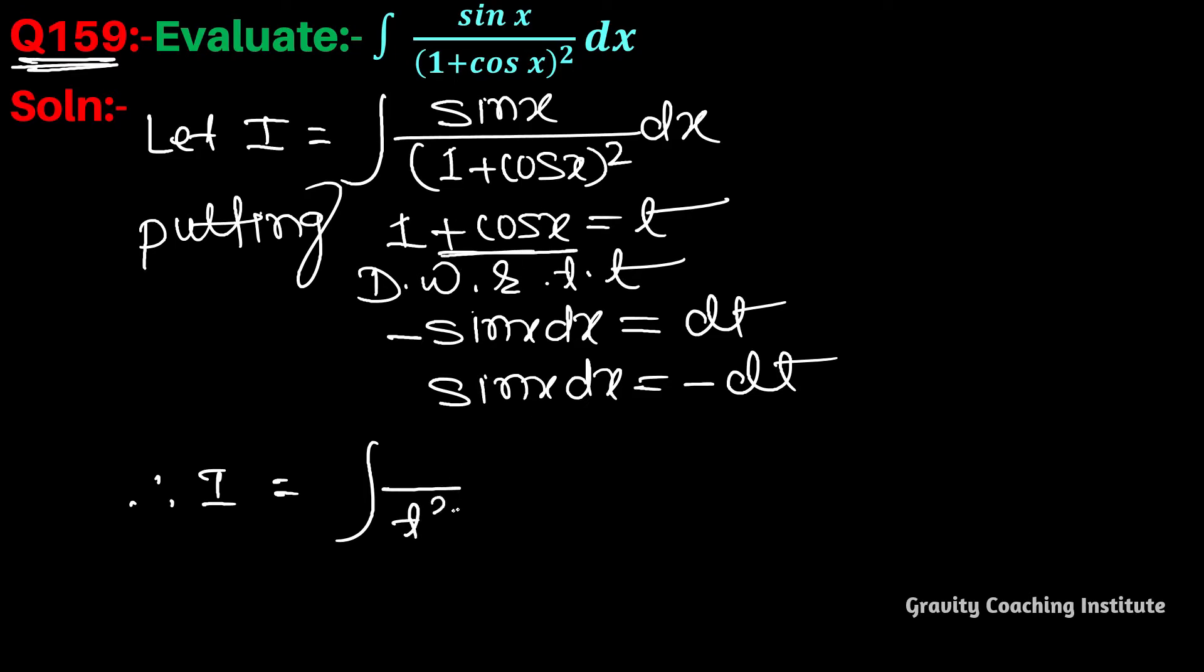It becomes 1 upon t square, and sin x dx becomes minus dt. Taking the minus outside the integration sign.